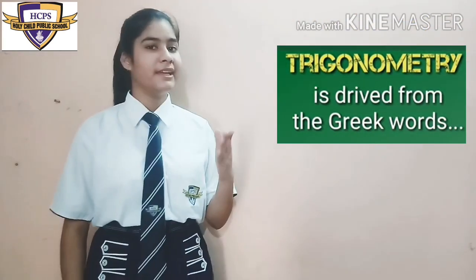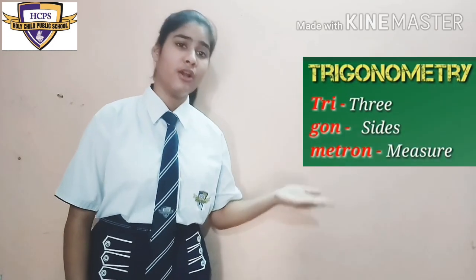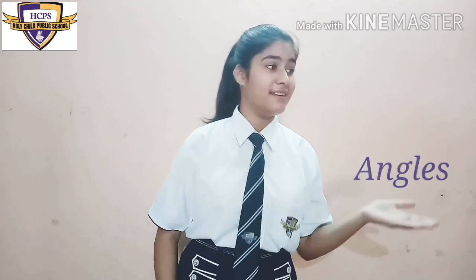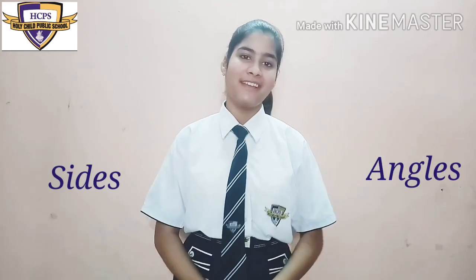The distances and the heights can be found by using some mathematical techniques which come under a branch of mathematics called trigonometry. The word trigonometry is derived from Greek words — tri, gon, and metron — which means three sides measurement. Basically, trigonometry is the study of the relationship between angles and the sides of a triangle.